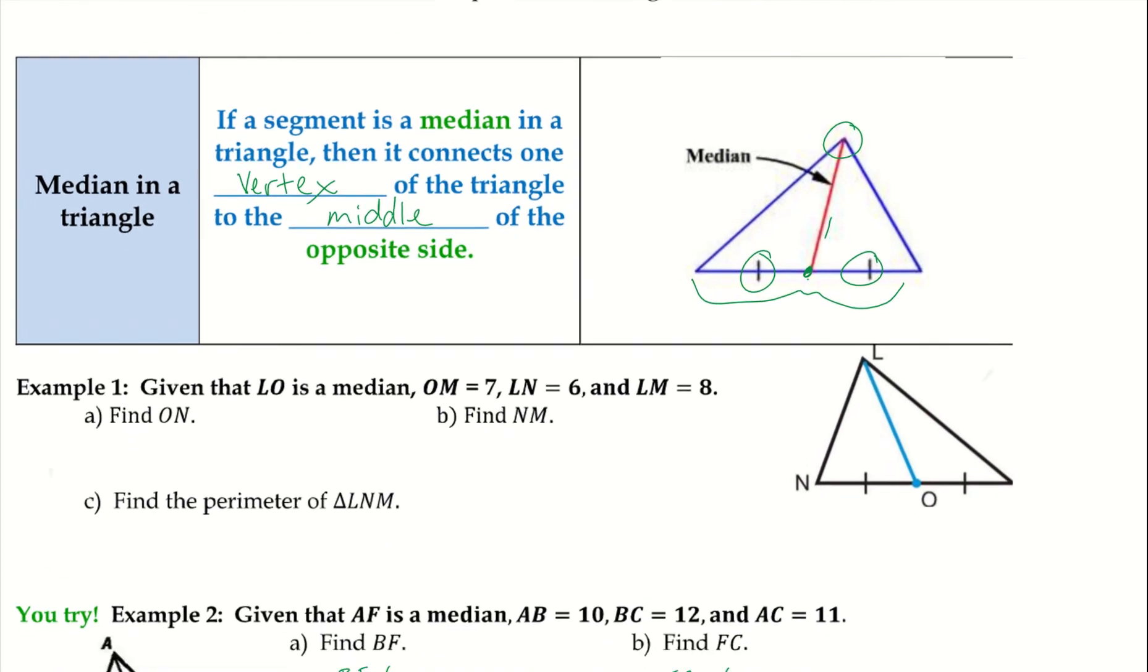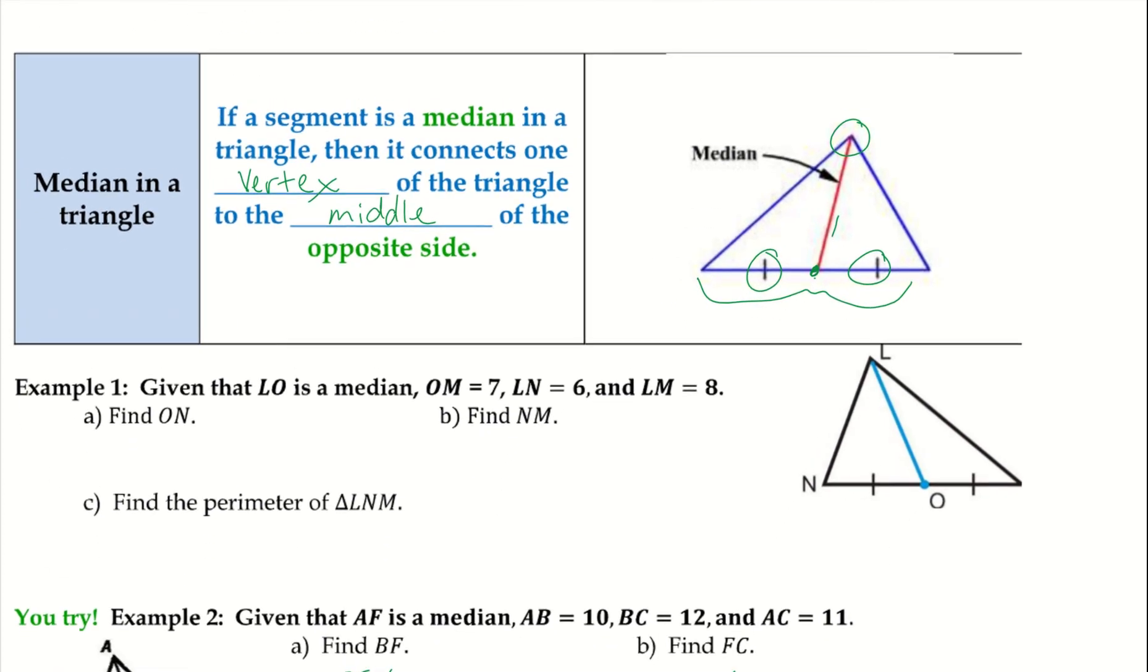If we take a look at example one, we have given that LO is a median, OM is 7, LN is 6 and LM is 8.